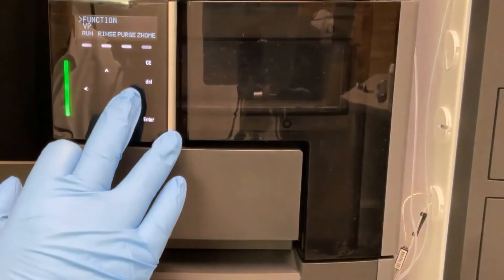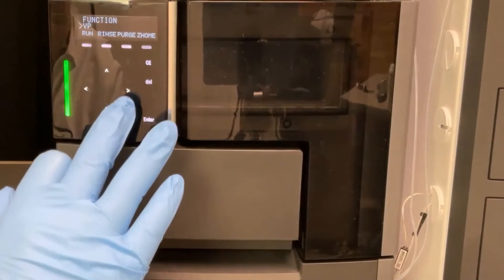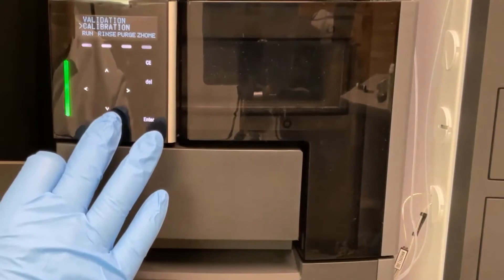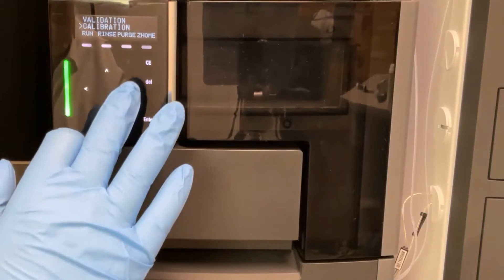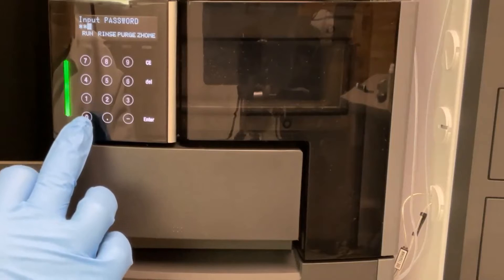Press the right arrow and then the down arrow to access the VP section. Then press the right arrow and then the down arrow until you arrive at the calibration section. Press the right arrow and then enter the default password which is 00000.